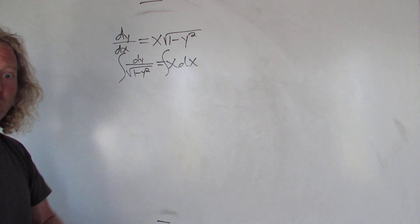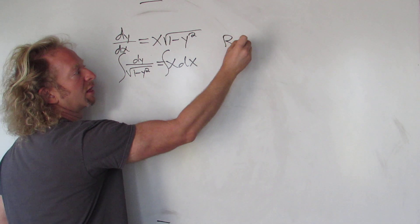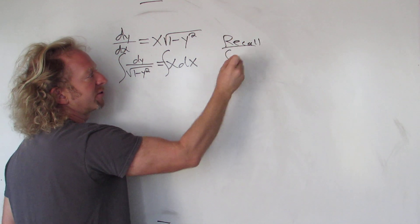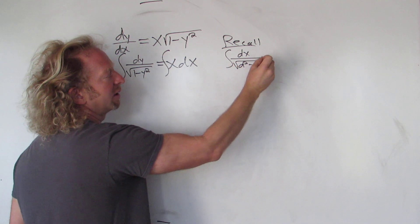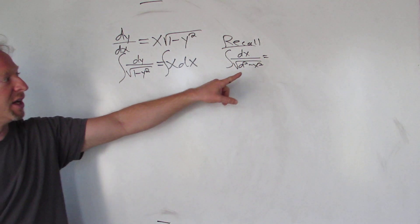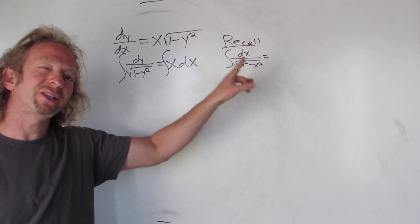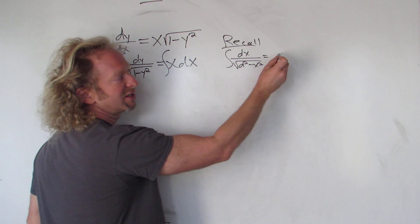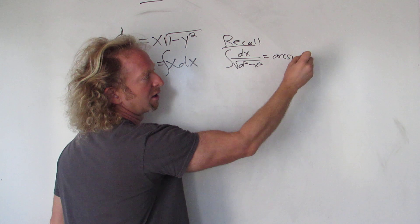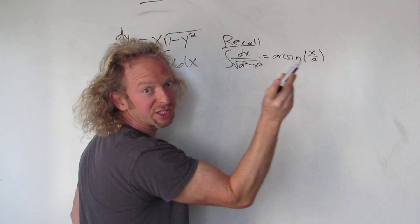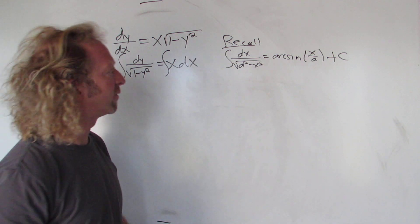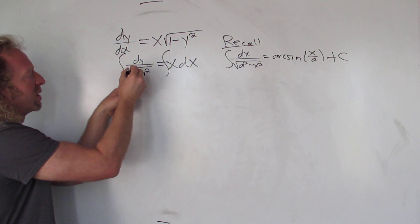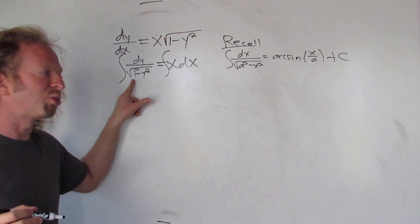If it's not, no worries. Recall if you have the integral of dx over a squared minus x squared, this is going to be arcsin of x over a plus a constant. So that is a formula from the past. In this case, this is really one squared, so a is just one, so this will just be arcsin of x over a plus a constant.